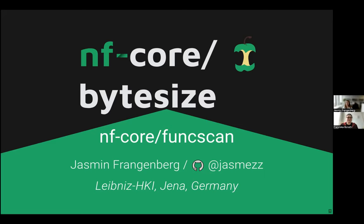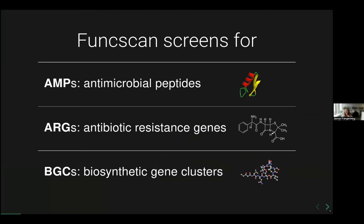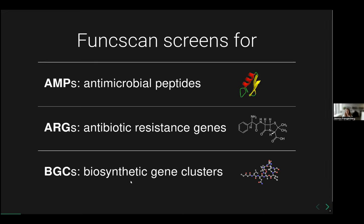Thank you very much. I will introduce this pipeline to you now, which is an NFCore pipeline to screen for functional components of nucleotide sequences from prokaryotic genomes or metagenomes. So what are these functional components? The pipeline screens for antimicrobial peptides, which are important in innate immunity — very short sequences of about 20 amino acids, findable even in fragmented DNA and metagenomes. The same applies to antibiotic resistance genes. On the other hand, biosynthetic gene clusters are quite big, because they consist of a whole gene cassette which codes for a whole metabolic function or secondary metabolite or natural product.